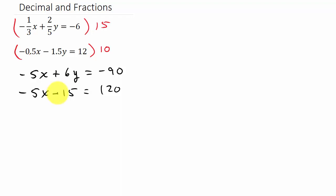Now remember, when you're solving a system of equations, you can either use the addition method or the substitution method. I do have videos on both methods if you want to check those out. In this one, we'll use the addition method. When I add the system together, I need one of the variables to drop out.